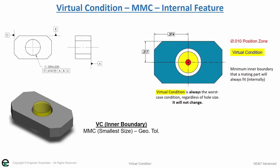Remember, your virtual condition now for an internal feature is your inner boundary. This is your MMC, your smallest size, minus your geometric tolerance.